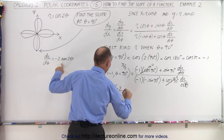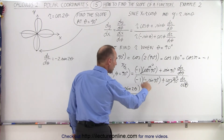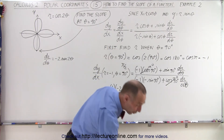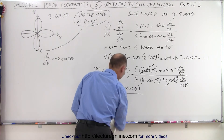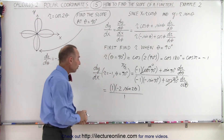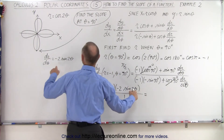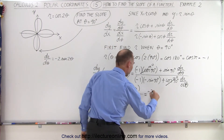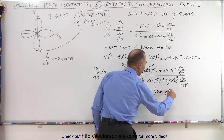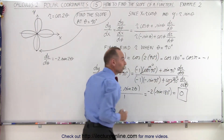Plugging in dr/dθ = -2sin(2θ), the numerator becomes minus 2 times the sine of 2 theta. The denominator simplifies: minus times minus gives plus, and the sine of 90 degrees is 1, so the denominator is plus 1. Then substituting theta = 90 degrees gives minus 2 times the sine of 180 degrees, which equals 0. The slope is 0, just as we expected.